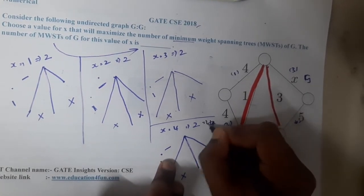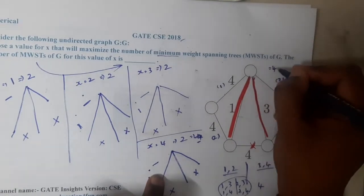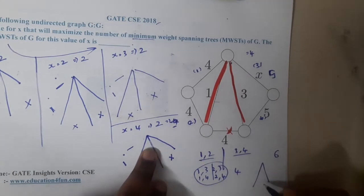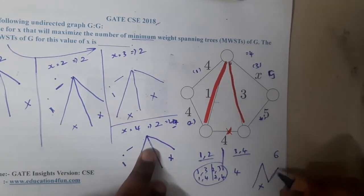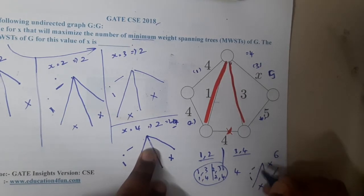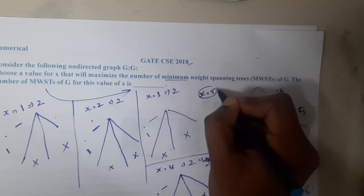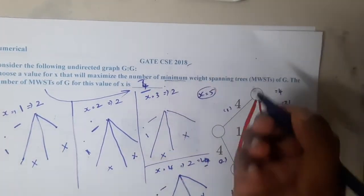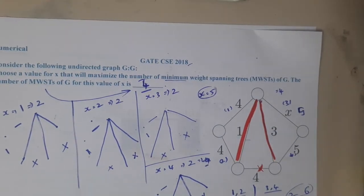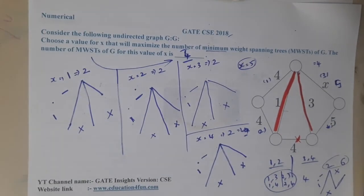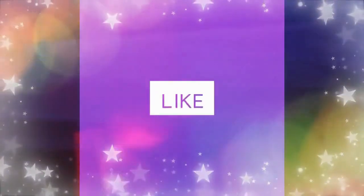For x=6, you select this first, then this, then this cannot be selected, then this is selected mandatorily, this cannot be selected, and at the end you again end up with two options. So at x=5 I get a maximum of 4 MSTs, which is the answer. The only thing is you need to visualize the graph. I hope everyone got a clear idea — in the next lecture we continue with the next question. Thanks for watching, like, share, and subscribe.